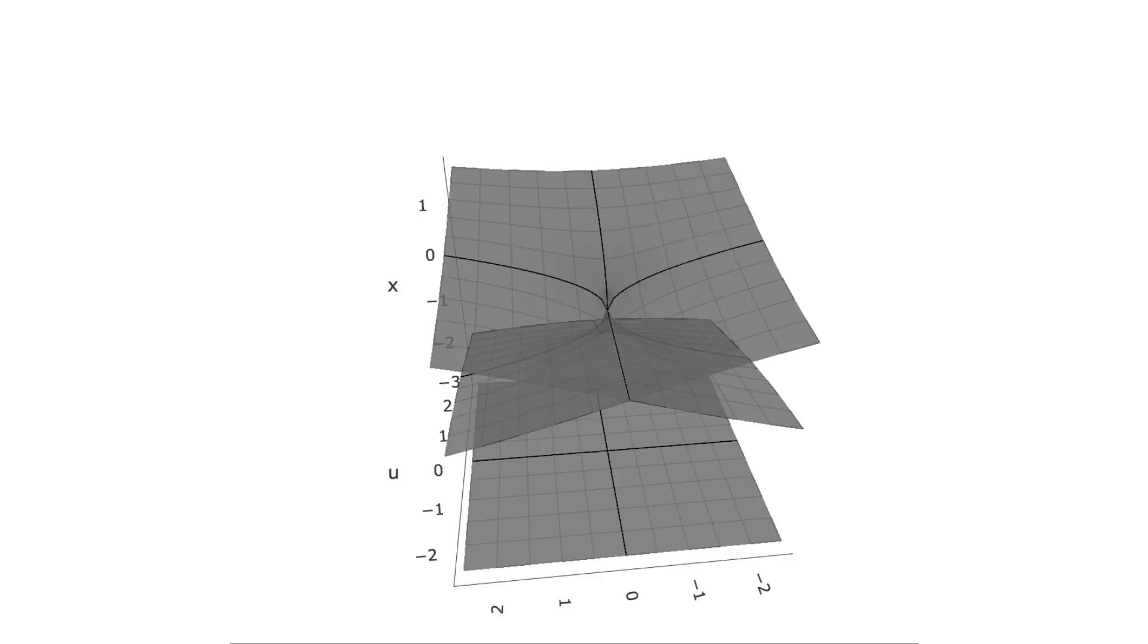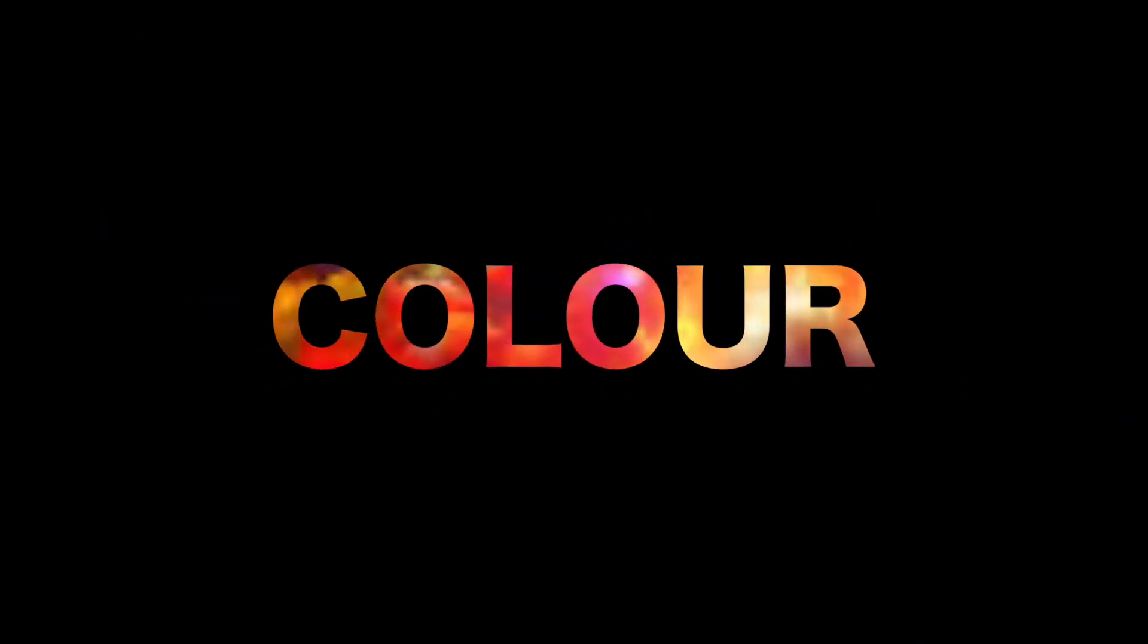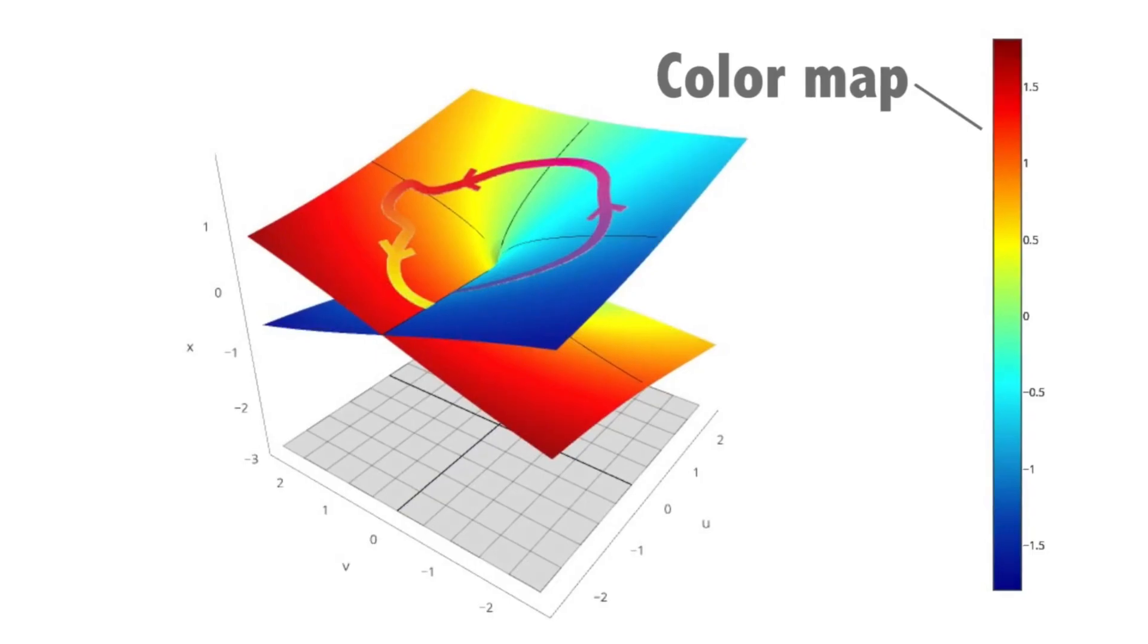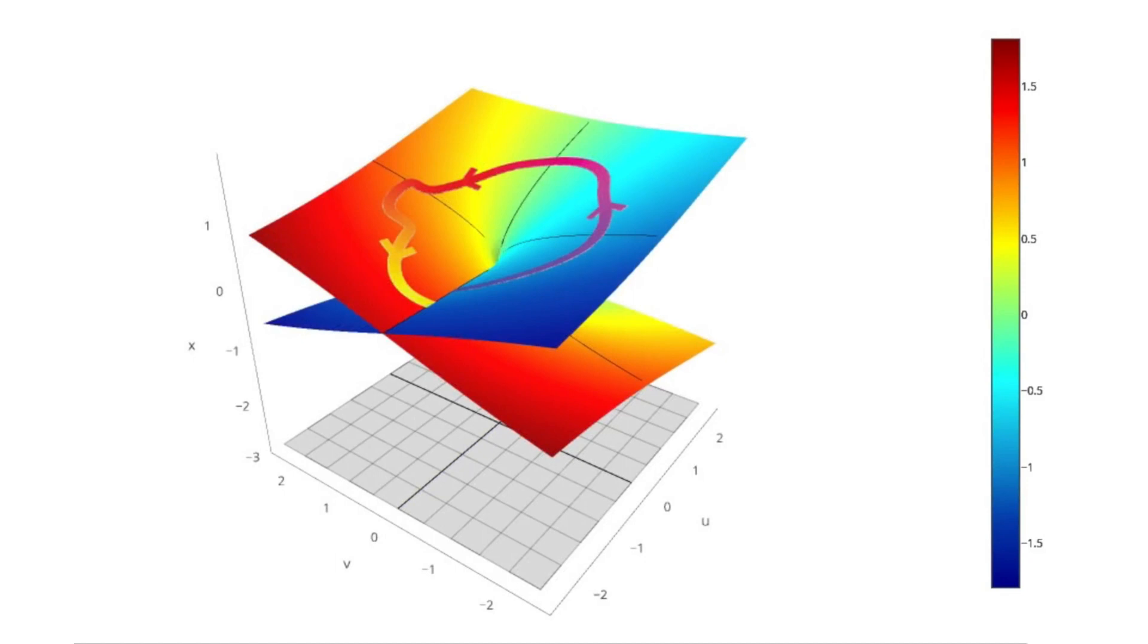One way to visualize the y value is to include color in our surface. To decide which colors to map to which point, we use a color map. We color each point on our surface with a color that corresponds to the value of the missing variable of our function.